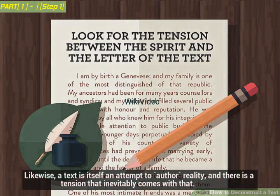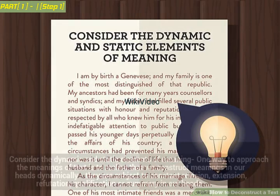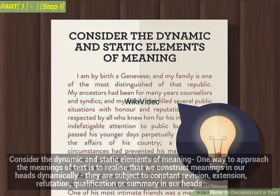Likewise, a text is itself an attempt at reality, and there is a tension that inevitably comes with that. Consider the dynamic and static elements of meaning. One way to approach the meanings of a text is to realize that we construct meanings in our heads dynamically — they are subject to constant revision, extension, refutation, qualification, or summary in our heads.